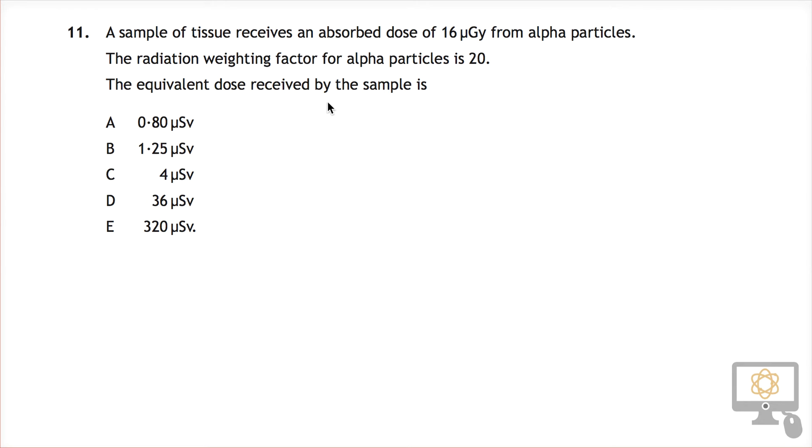So I'm just going to write that down first of all, that the absorbed dose is 16 micrograys. Then it says the radiation weighting factor of the alpha particles is 20, so I'll also take a note of that, the radiation weighting factor is 20.